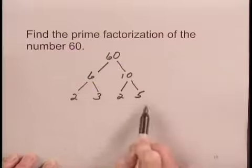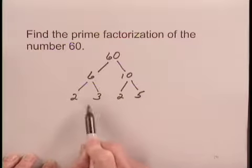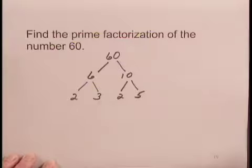Now we look at all the numbers at the ends of the branches of the tree, and we see that each of these numbers—2, 3, and 5—is a prime number.